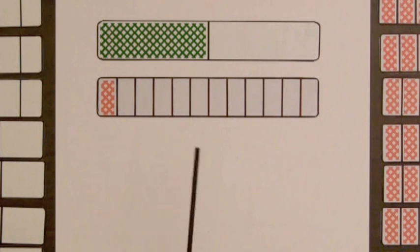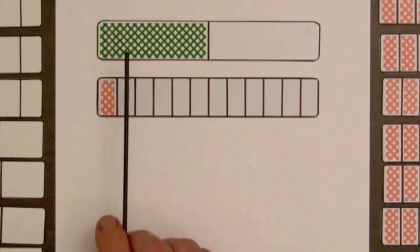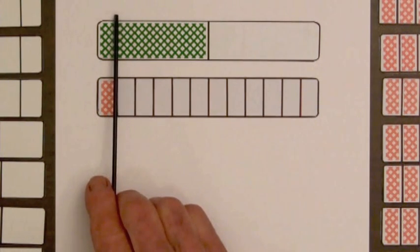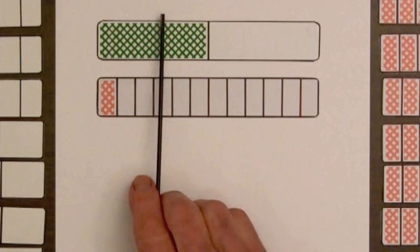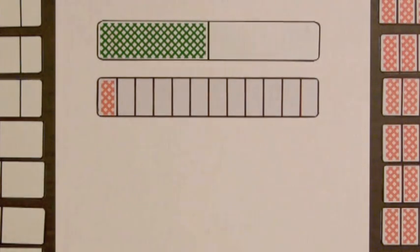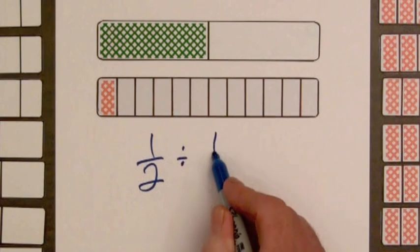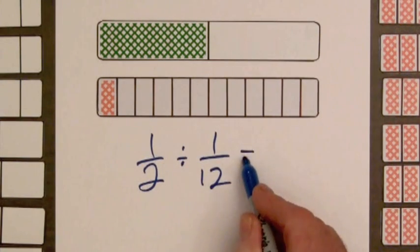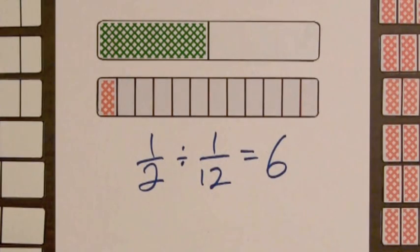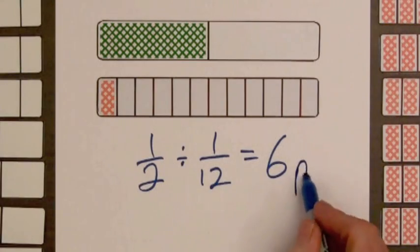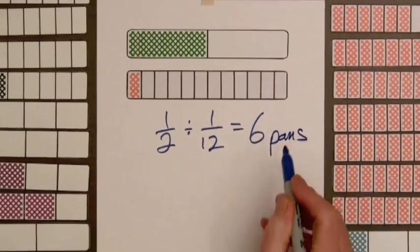Well, we can see that the shaded amount of the lower bar fits into the shaded amount of the top bar one, two, three, four, five, six times. So we can write one-half divided by one-twelfth equals six. So six pans of biscuits can be made.